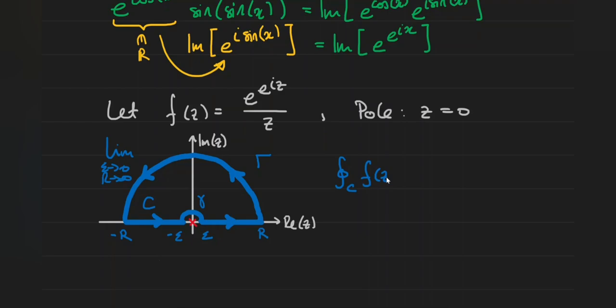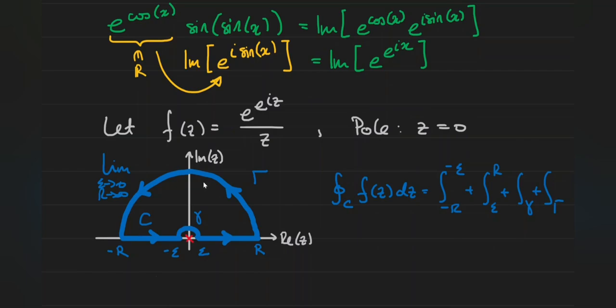Now let's write out the contour integral over c of our function and decompose it into each of its separate parts: the integral from negative r to negative epsilon, then epsilon to r, plus the integrals over the small arc little gamma and the big arc gamma. Inside this contour domain there are no poles or singularities whatsoever — it's completely analytic — which means by Cauchy's integral theorem, this contour integral evaluates to zero.